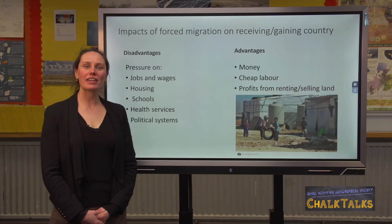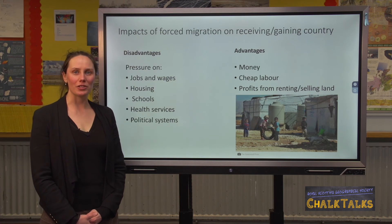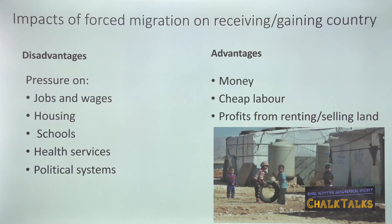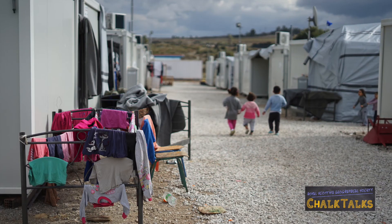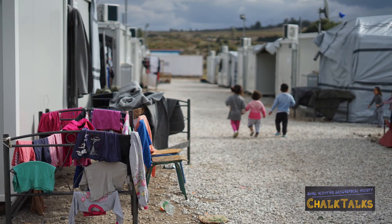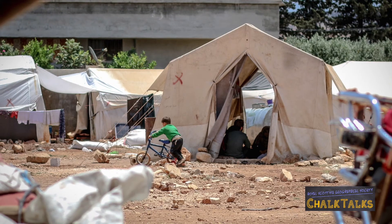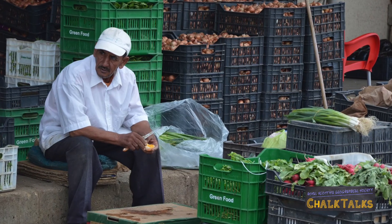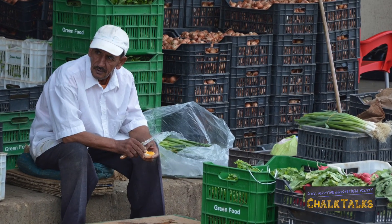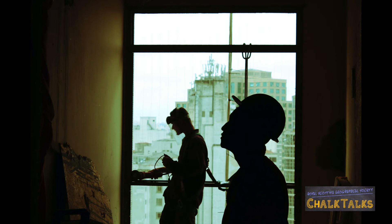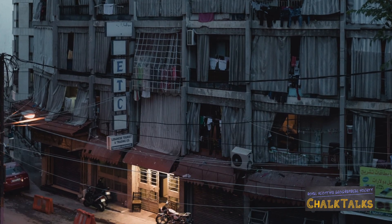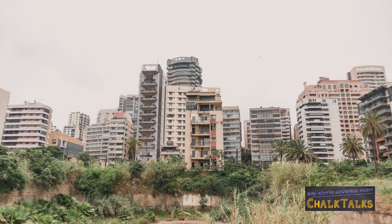Forced migration can have significant political, social, economic and environmental impacts on the receiving country. Having accepted 1.5 million Syrian refugees by 2020, Lebanon has the highest number of refugees per capita in the world. This has had significant effects on jobs and wages — as the number of refugees has grown, there has been downward pressure on wages and local people have been likely to lose jobs to Syrian refugees. In Lebanon, 55% of people now qualify as poor and extreme poverty is at 28%.